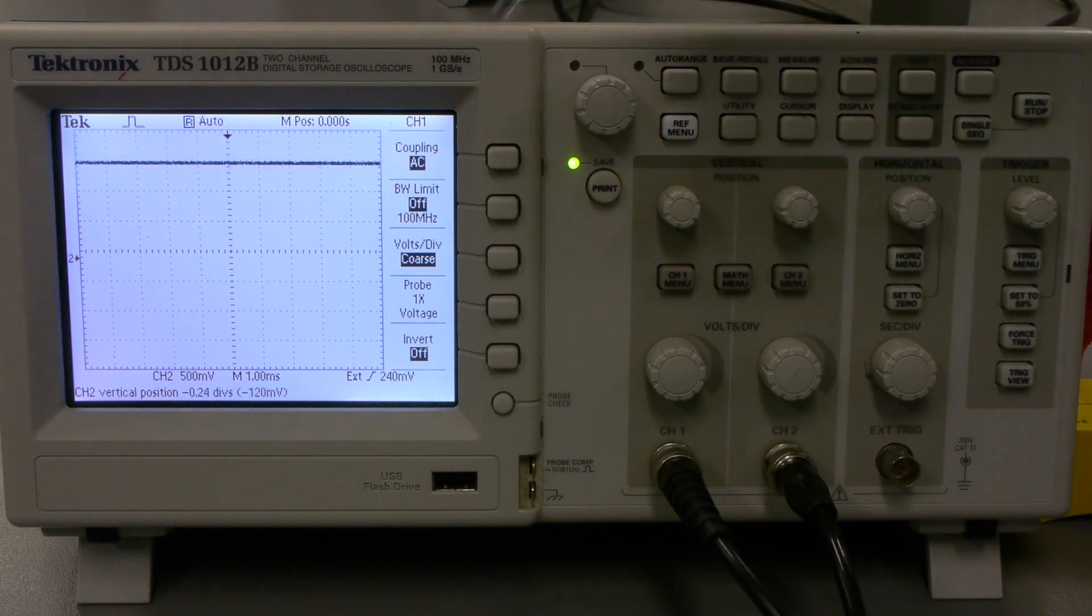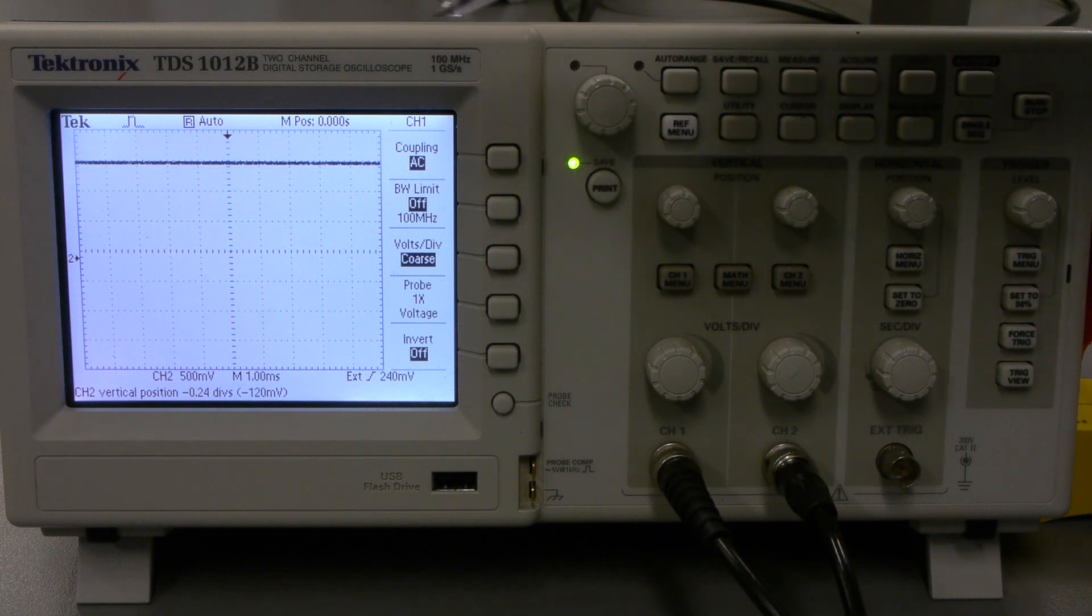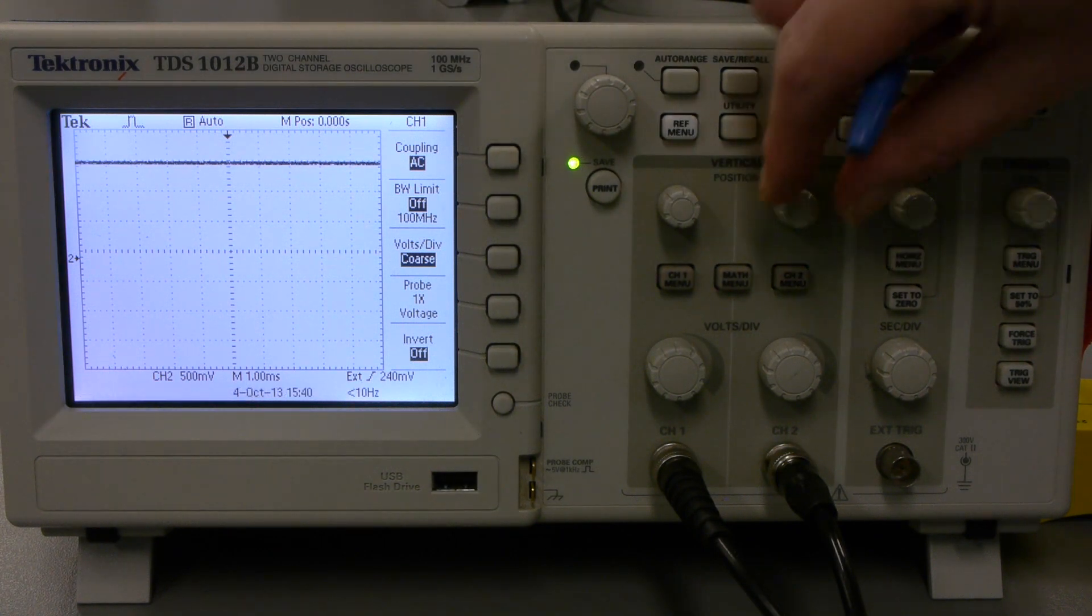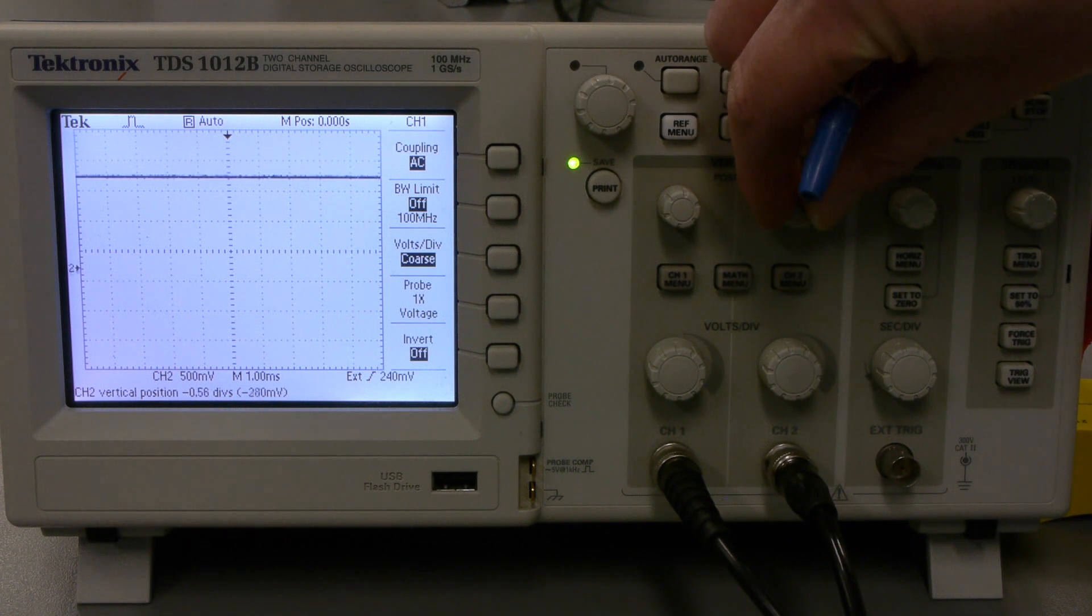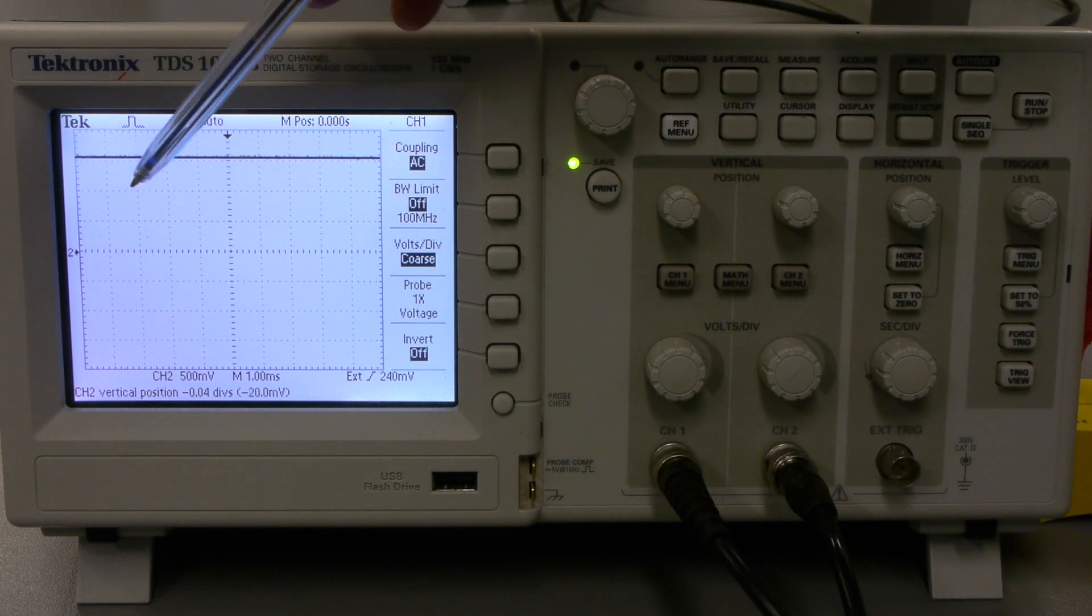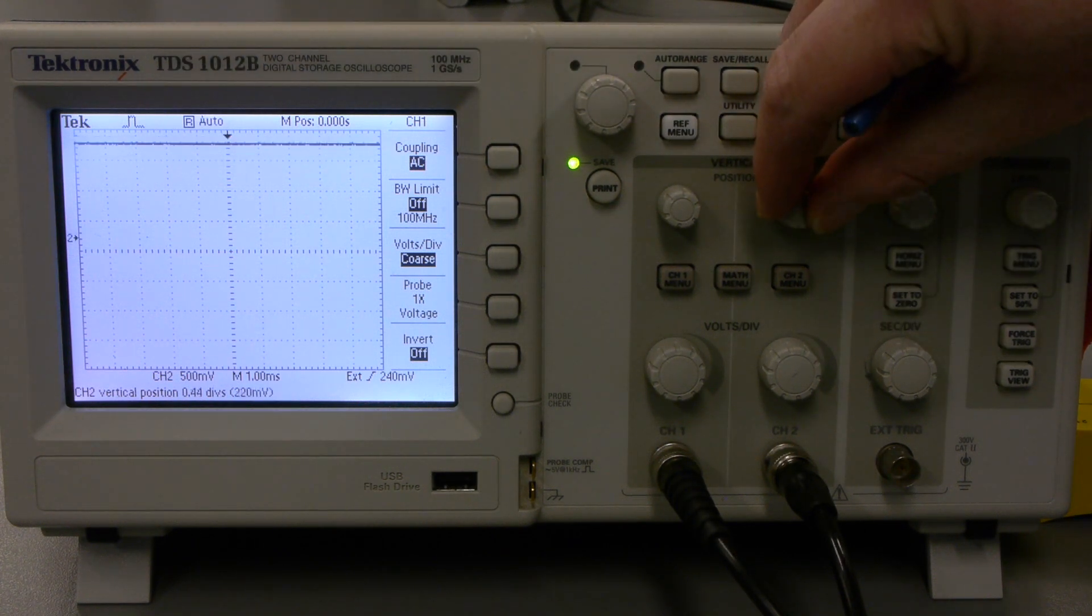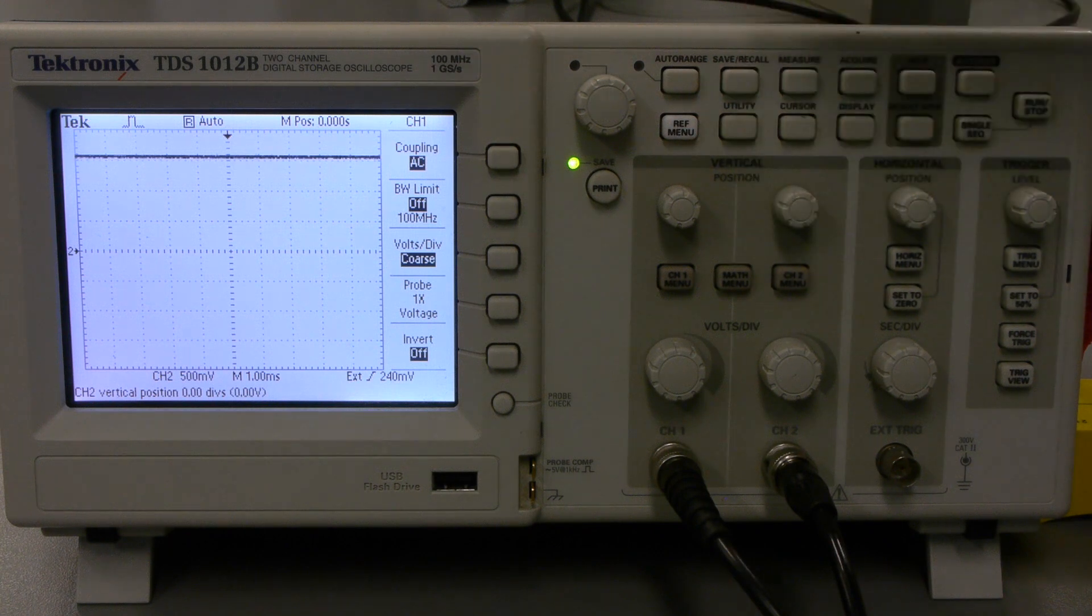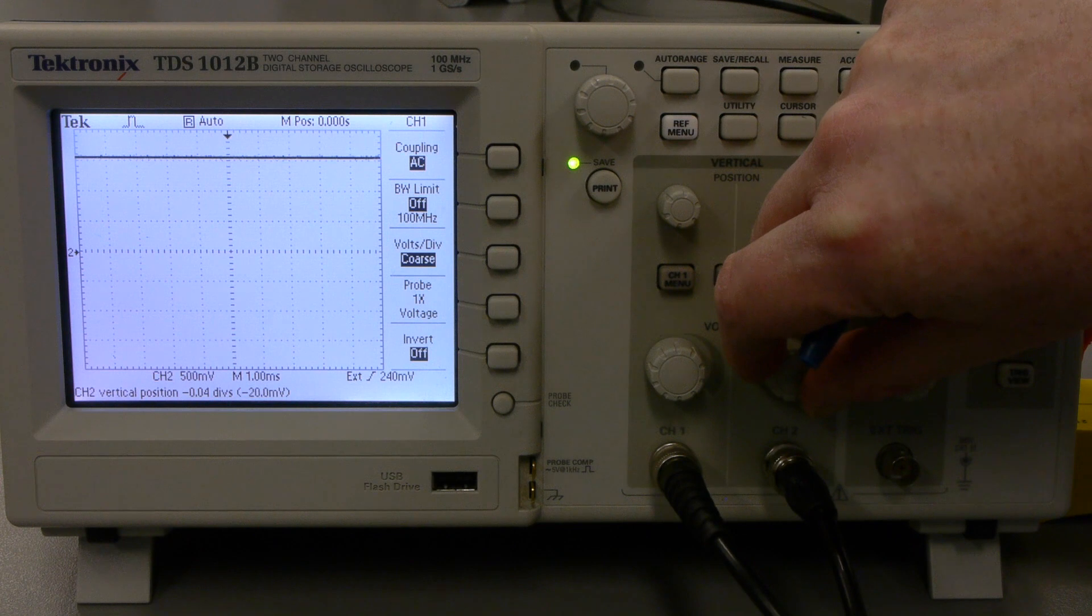So by measuring the vertical boxes here, we know the height of the voltage. But hang on a minute. If we can change this, how do we know where to start? Looking closer, you can see a small little arrow here. This is our zero position. So as I move around, we can see where it starts.